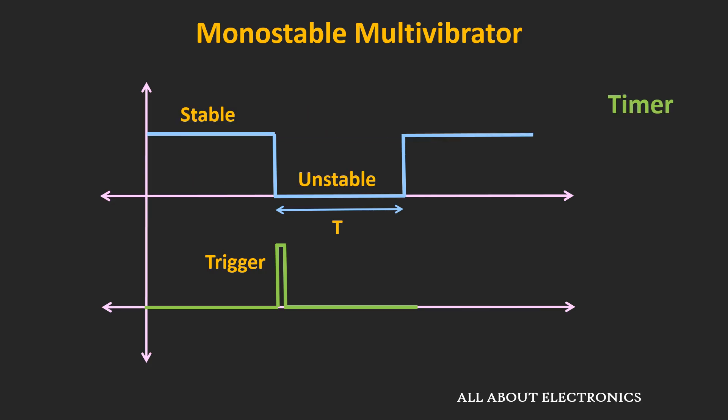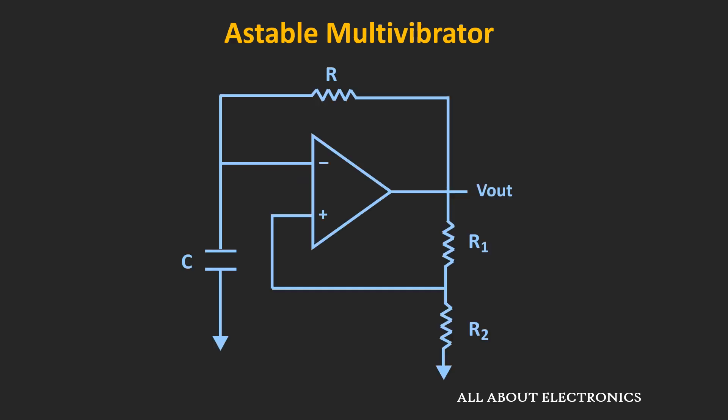And likewise, if the stable state is a high state, then whenever the trigger signal is applied, then momentarily the output goes into the unstable state. So let's see how we can design this monostable multivibrator using the op-amp.